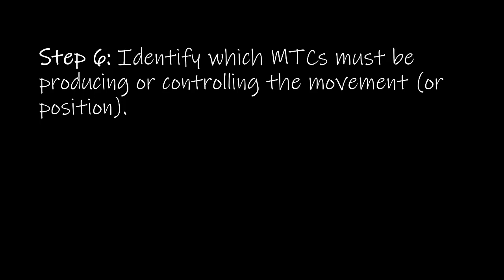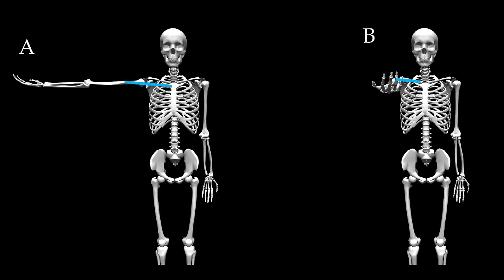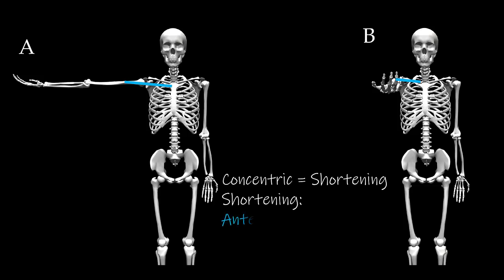For Step 6, we identify which MTCs must be producing or controlling the movement or position. We've already identified that the MTC action is concentric. When we have a concentric MTC action, the MTCs that are shortening are going to be controlling the movement. The MTCs that are shortening in this scenario are those on the anterior side of the axis of rotation — our horizontal ADductors. So horizontal ADduction is being controlled concentrically by the horizontal ADductors.